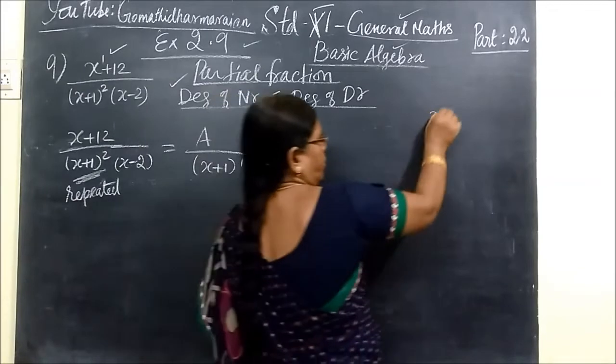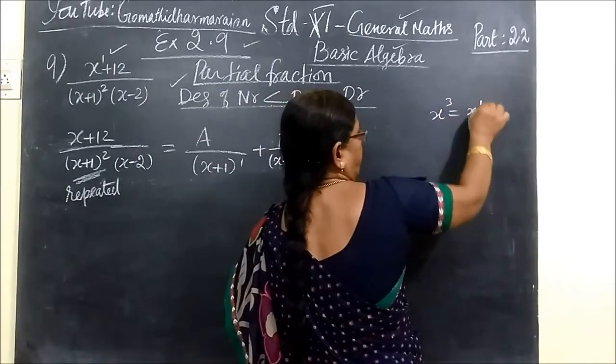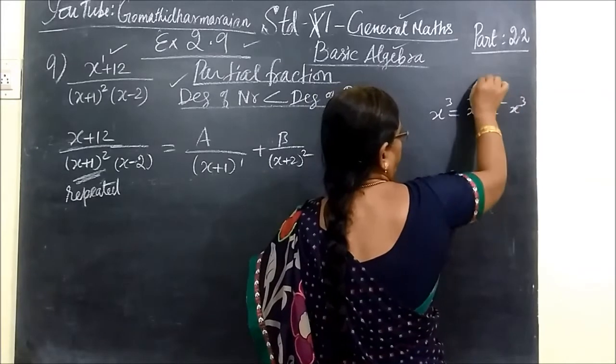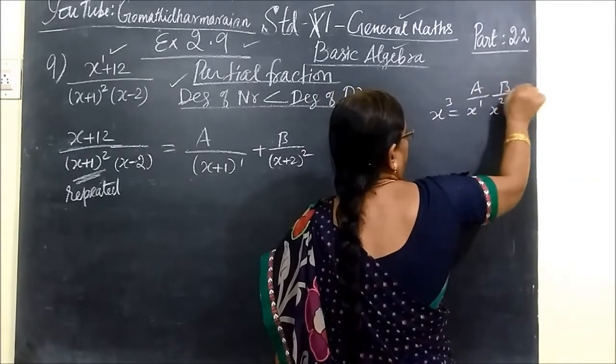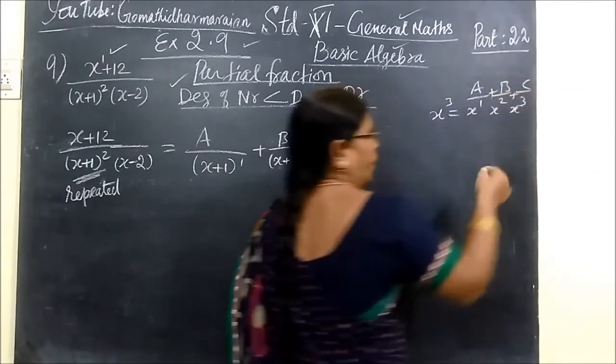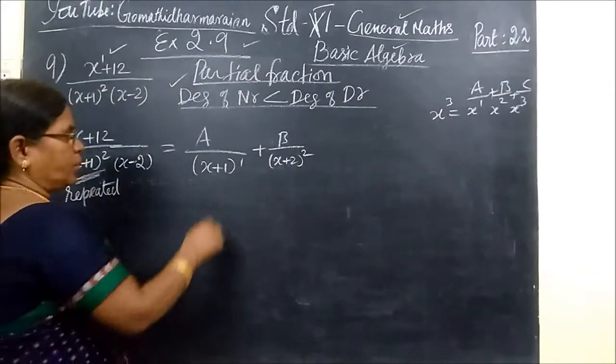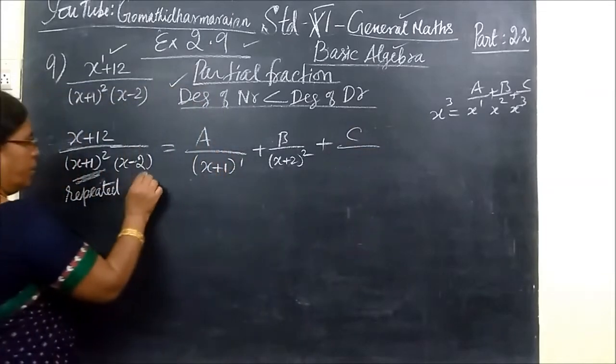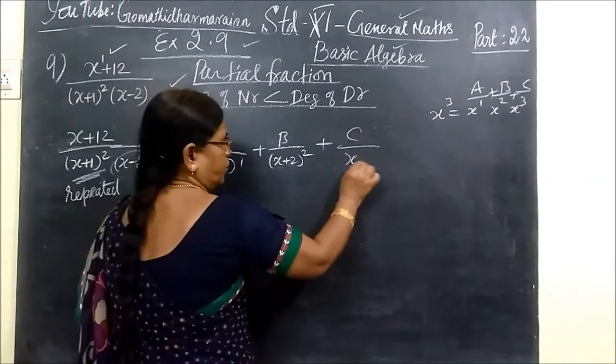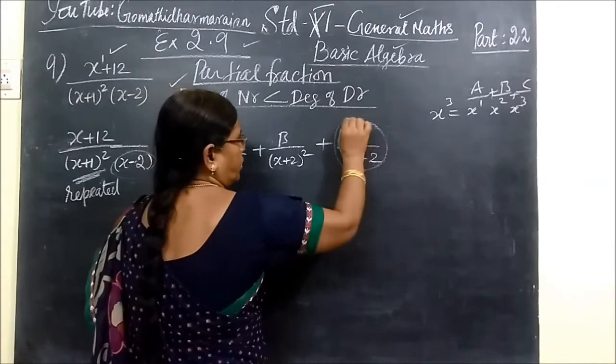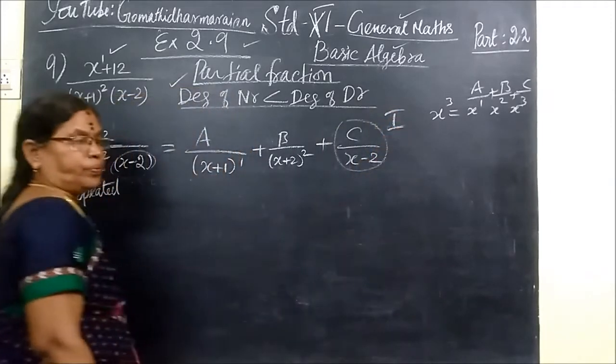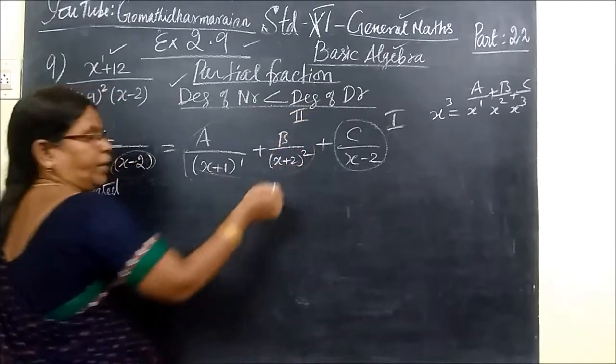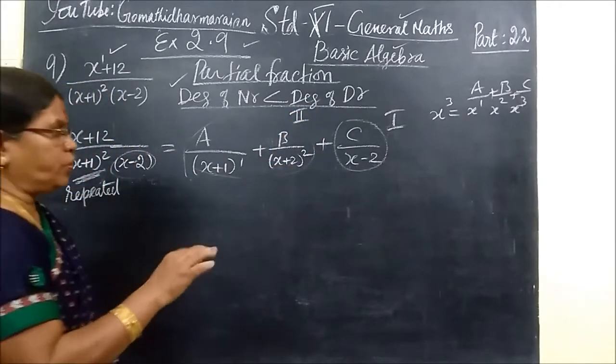So repeated are, once it has power 1, then x by x, then x cube. So in that way we are writing. Similarly, power 1 power 2. Then c by third constant c by x minus 2. This is x minus 2. So this comes under type 1, and this comes under type 2.